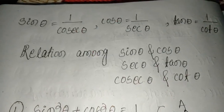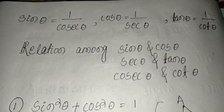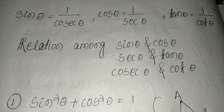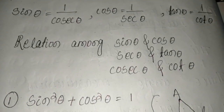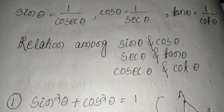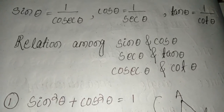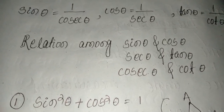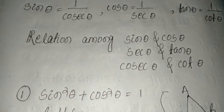We can write: sin theta equals 1 by cosec theta, cos theta equals 1 by sec theta, and tan theta equals 1 by cot theta. The relations among sin theta and cosec theta, sec theta and tan theta, and cosec theta and cot theta are important to understand.